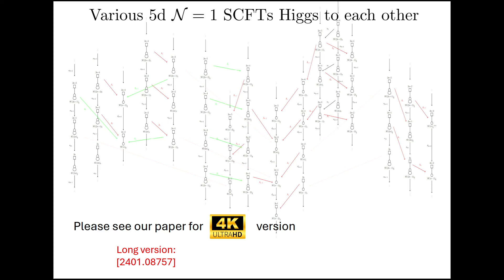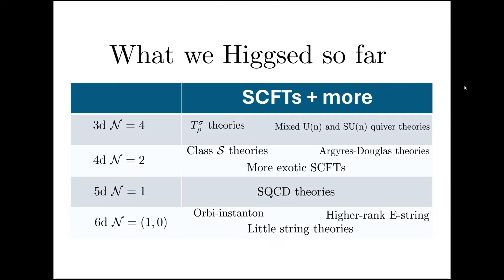Beyond just relating different SCFTs, Higgsings can also help us discover new SCFTs in various dimensions and help us understand the geometry of the Higgs branch better. So far, we've Higgsed many different theories in 3, 4, 5, and 6 dimensions. And not only were we able to reproduce the Higgsings via other methods in the literature, we also find many new directions of Higgsings.